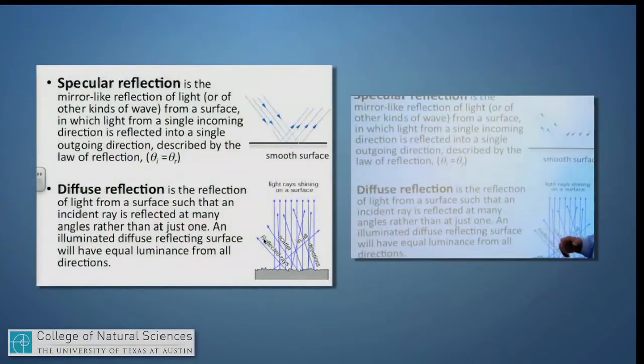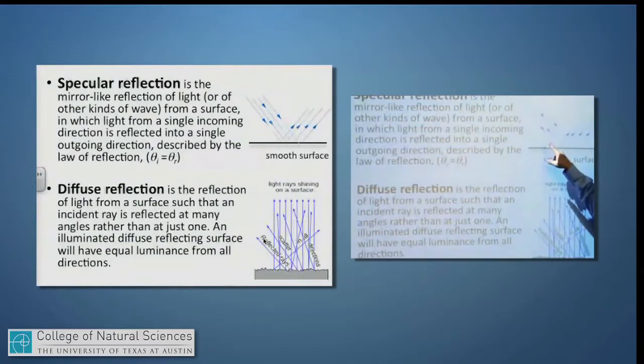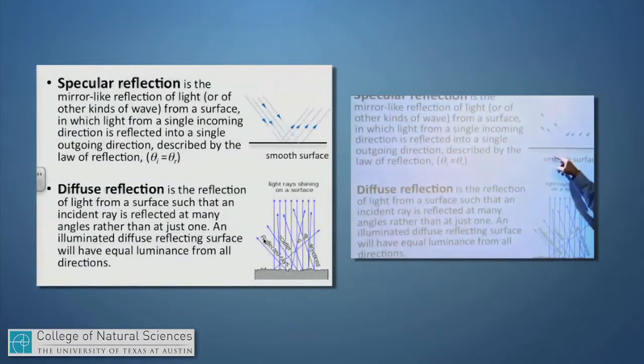So I want to make sure that we all have these two terms very much embedded in our minds. Specular reflection is the kind of mirror-like reflection off of a smooth surface so that light obeys the law of reflection. In other words, the angle into the mirror or into the surface is equal to the angle reflected off of the surface.